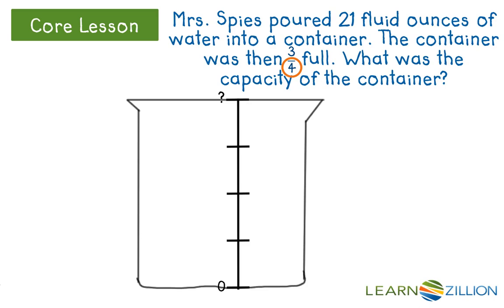Remember, the denominator tells me how many equal pieces total I have. So I know the first three boxes must total 21 fluid ounces. In order to figure out how much the entire container can hold, I first have to figure out how much each mark is worth on my scale.